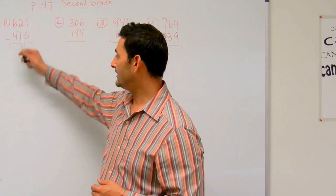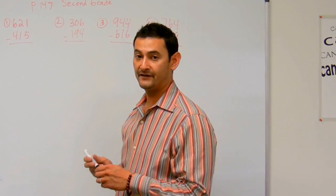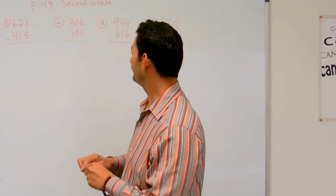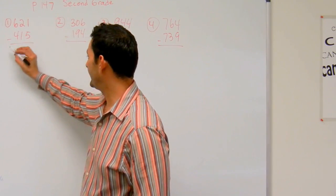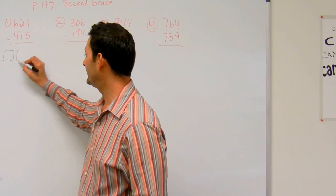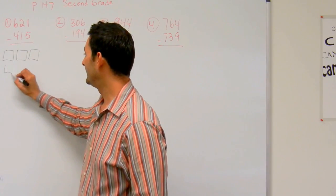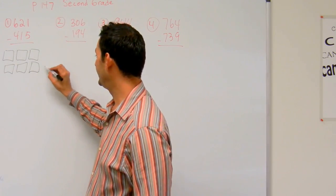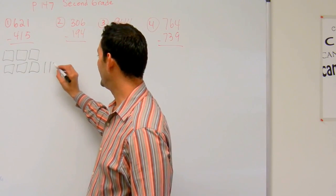Let's start with number 1. Here I've got 621 minus 415. How am I going to do that? Well, let's just go ahead and get started. I'm going to draw a model: 600, 20, and 21.